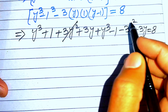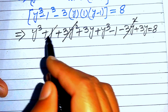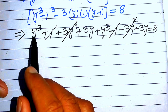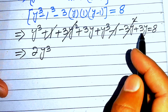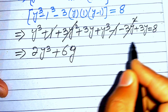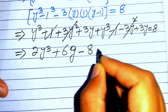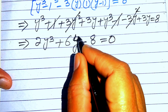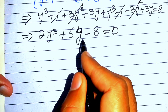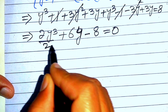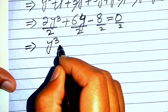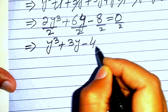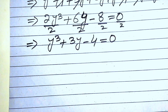The +3y² and −3y² cancel each other, and +1 and −1 also cancel. We get 2y³ + 6y = 8, which moves to 2y³ + 6y − 8 = 0. Dividing both sides by 2 gives: y³ + 3y − 4 = 0.